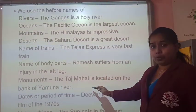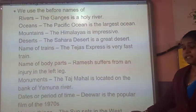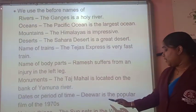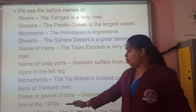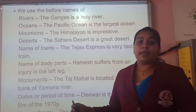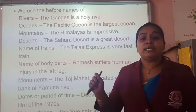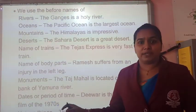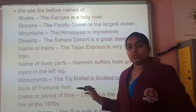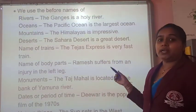Also before monuments and things that are unique in nature — 'The sun sets in the west', which is only one in our world. Before dates or periods of time — 'RRR is a popular film of the 1990s', and 'His birthday falls on the 7th of December.' So these are the places where we use the definite article 'the'.